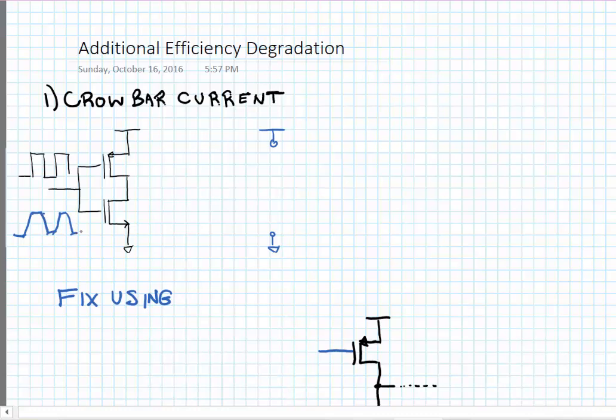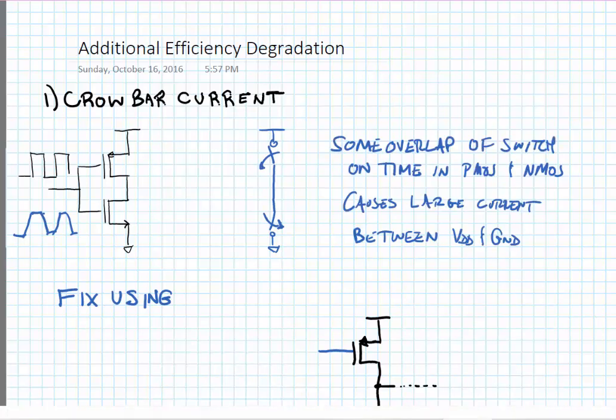When we do that, the PMOS and NMOS can be on at the same time for brief periods of time. So here we've shown the PMOS switch is just opening as the NMOS switch is just closing. And that leads to crowbar, or sometimes they call it shoot-through current.